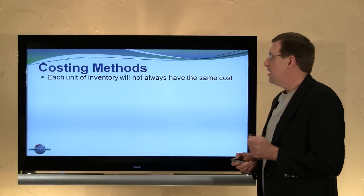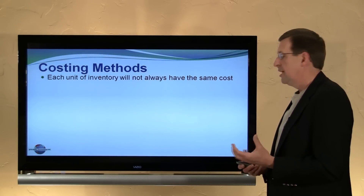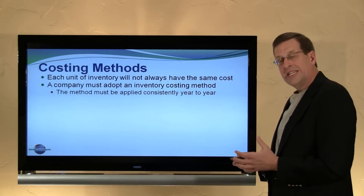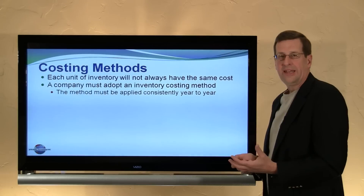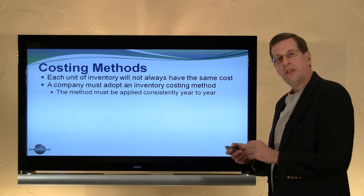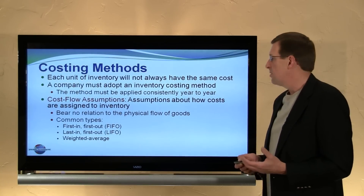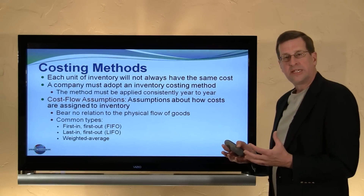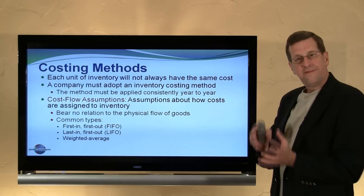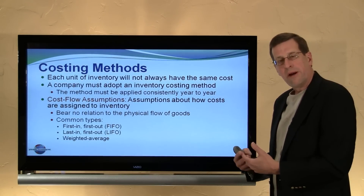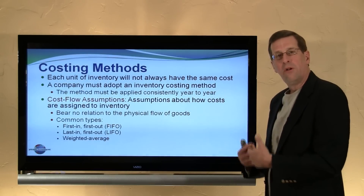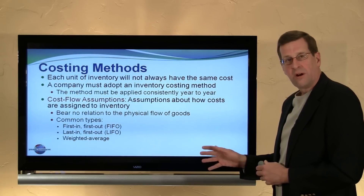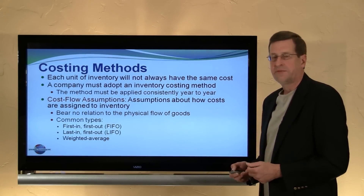Regarding costing methods: each unit of inventory will not always have the same cost as we buy or acquire manufactured goods — there may be a different cost incurred per unit. Therefore, a company must adopt an inventory costing method that is applied consistently from year to year to allocate the cost of all units to ending inventory and to units sold (cost of goods sold). This gives rise to certain cost flow assumptions — assumptions about how costs are assigned to inventory — which bear no relation to the physical flow of goods. For example, we could cost milk inventory by FIFO, LIFO, or average cost, even though physically we would sell milk on a first-in, first-out basis. No matter how the physical flow occurs, we could use any of these methods for accounting purposes.